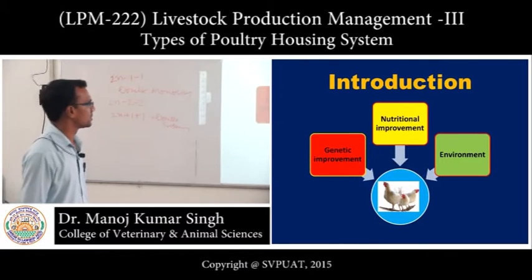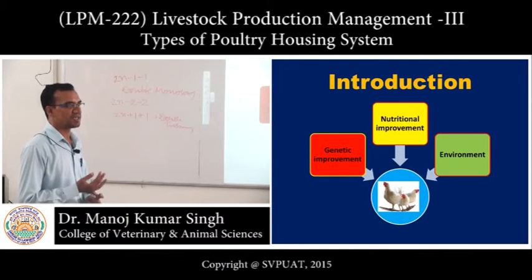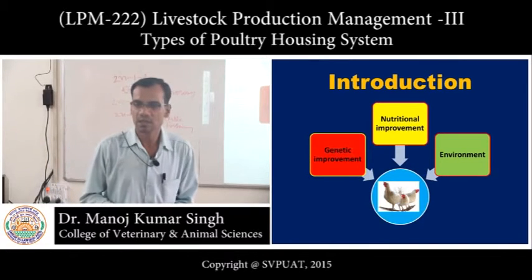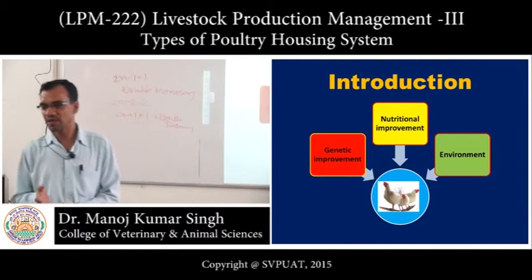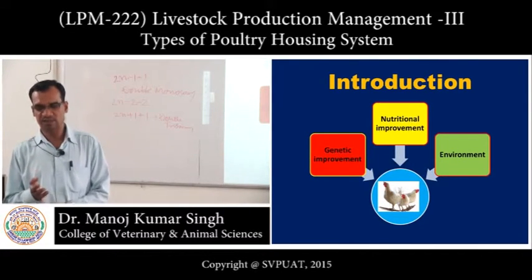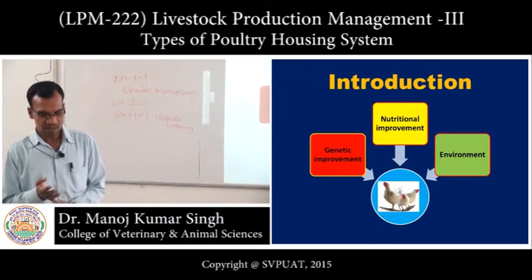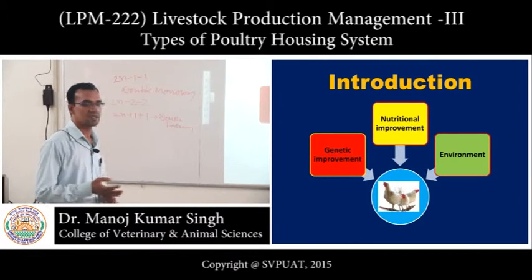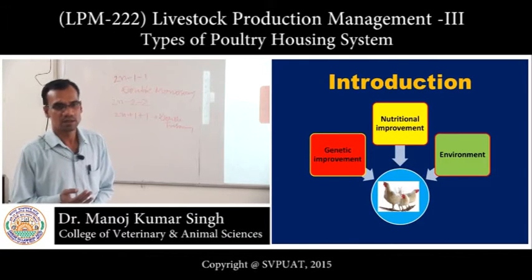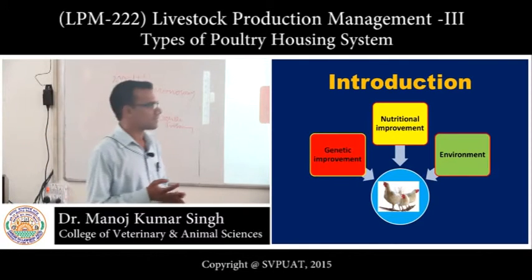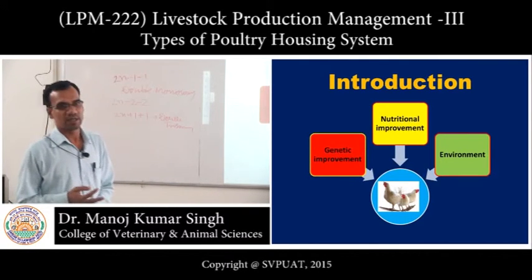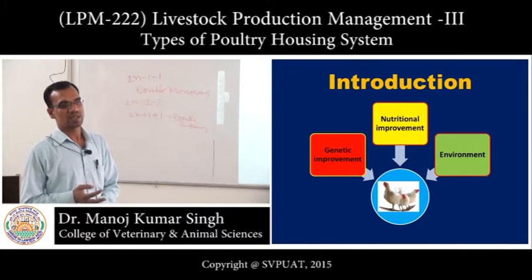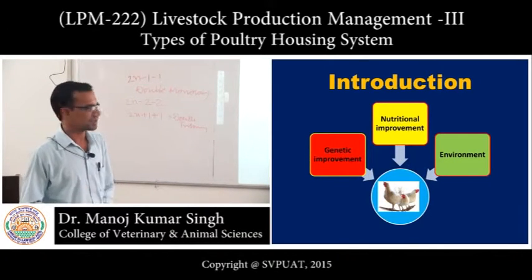The first point for making a housing system for poultry is genetic improvement — we can achieve genetic improvement by providing an environment where poultry can stay. Next is nutritional improvement, and beyond that, we can protect the poultry by providing housing from inclement weather conditions.